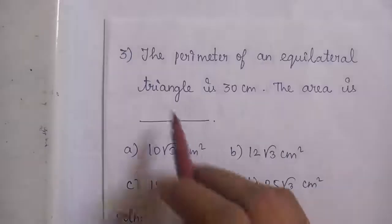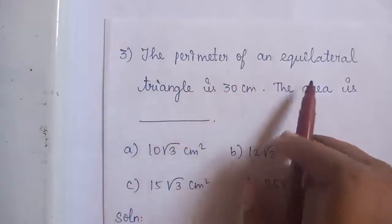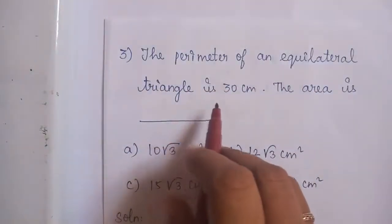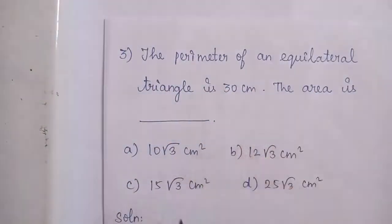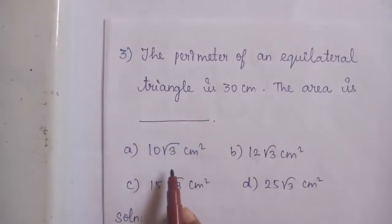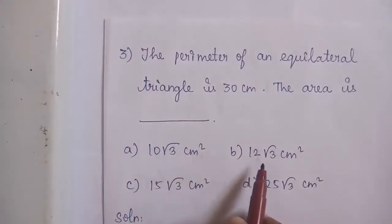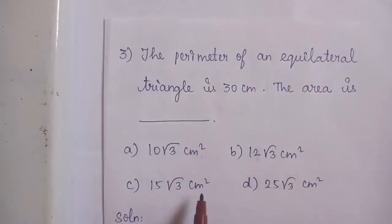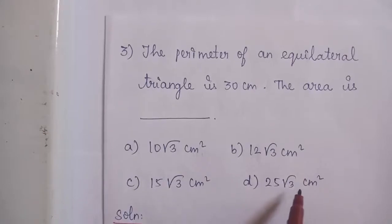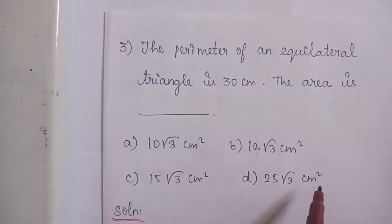Question No. 3: The perimeter of an equilateral triangle is 30 cm. The area is dash. Option A: 10√3 cm square. Option B: 12√3 cm square. Option C: 15√3 cm square. Option D: 25√3 cm square.